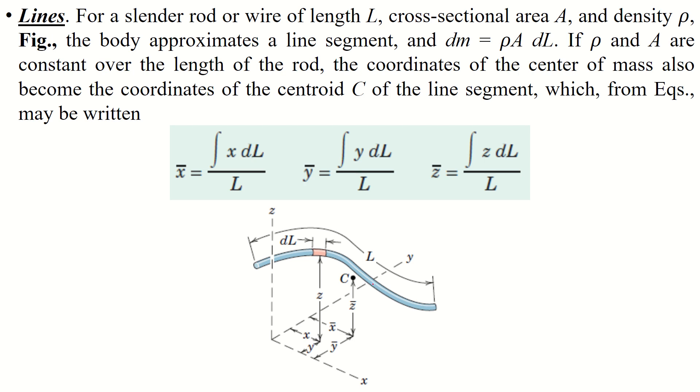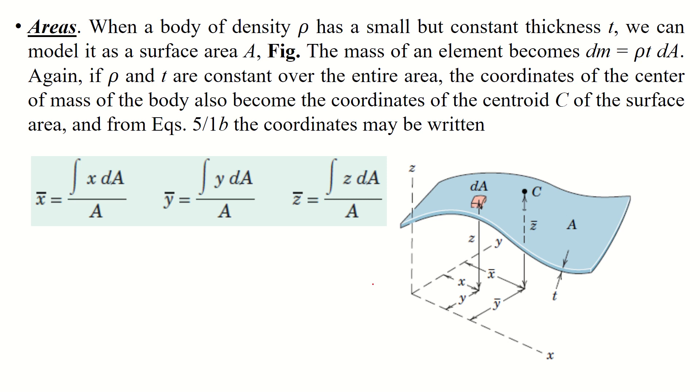Now for areas: when a body of density ρ has a small but constant thickness t, we can model it as a surface area A. The mass of an element becomes dm = ρt dA. Again, if ρ and t are constant over the entire area, ρt will cancel out each other as part of volume. The only thing that remains is the area.